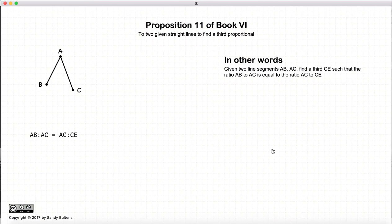In this proposition we are going to find the third proportional, which basically means if we have two proportionals, or two lines, and a ratio of AB to AC, to find the third proportional we need a third line CE, such that AB to AC is equal to AC to CE. So here is the ratio that we want to find and to construct the line CE.